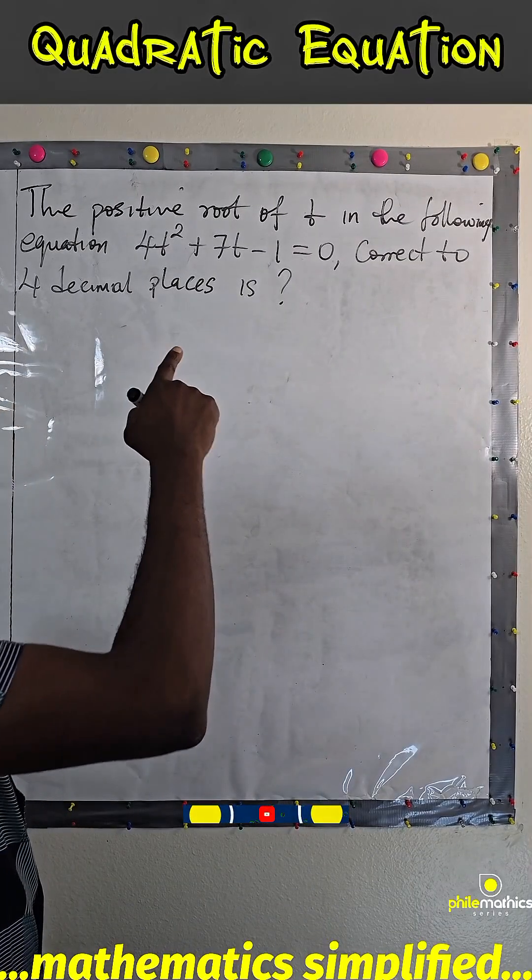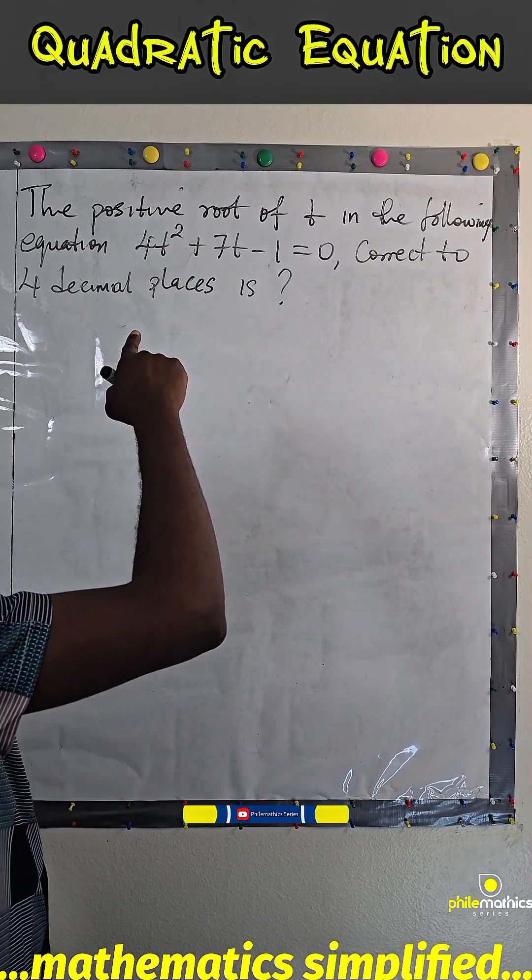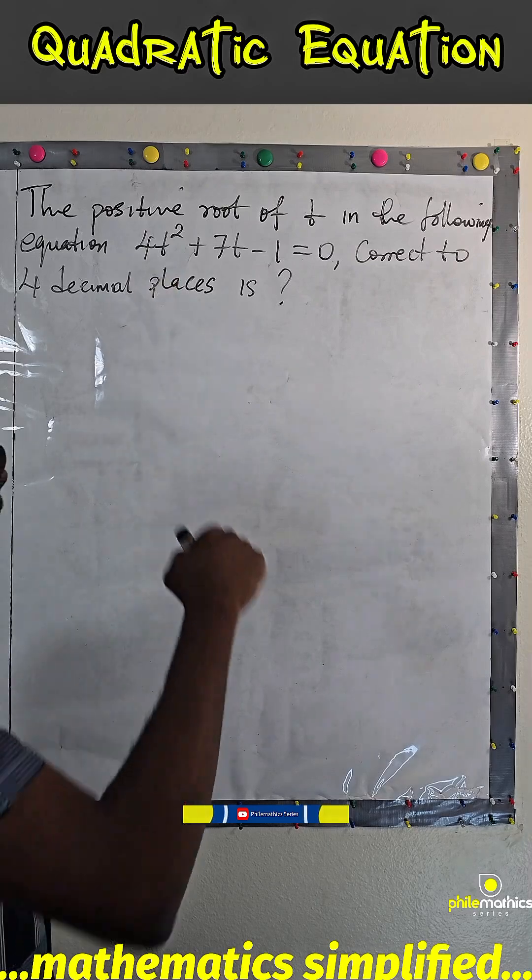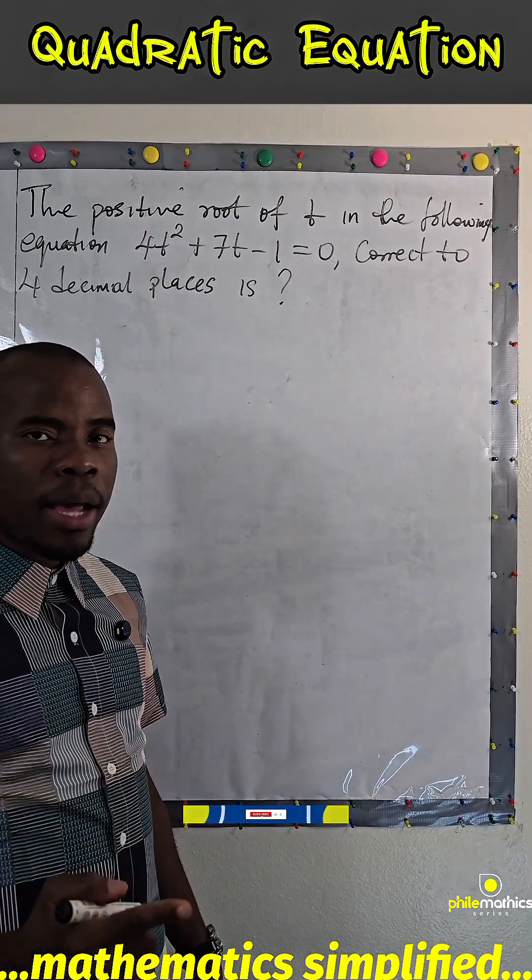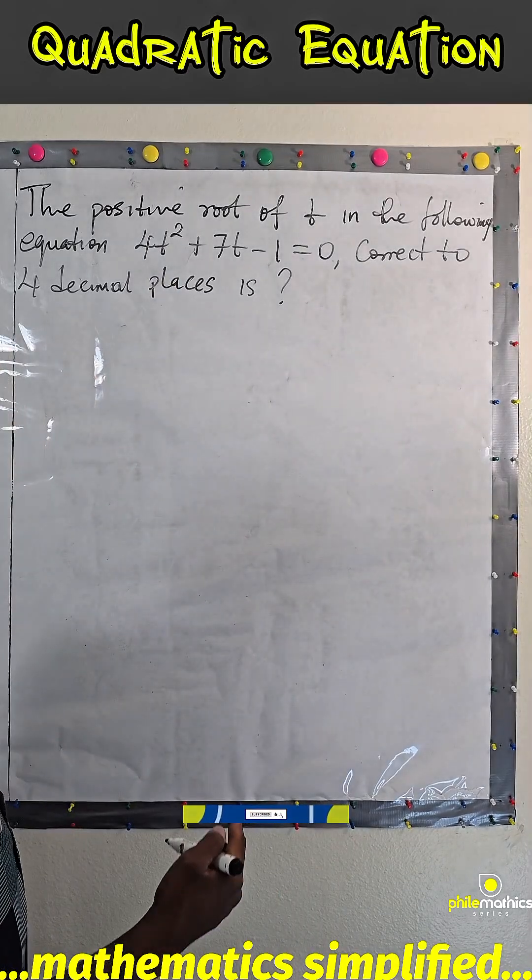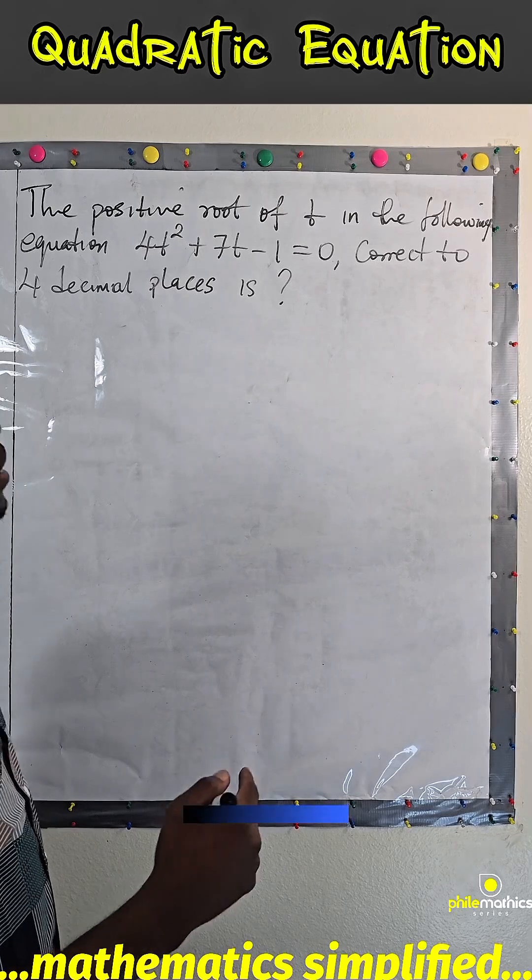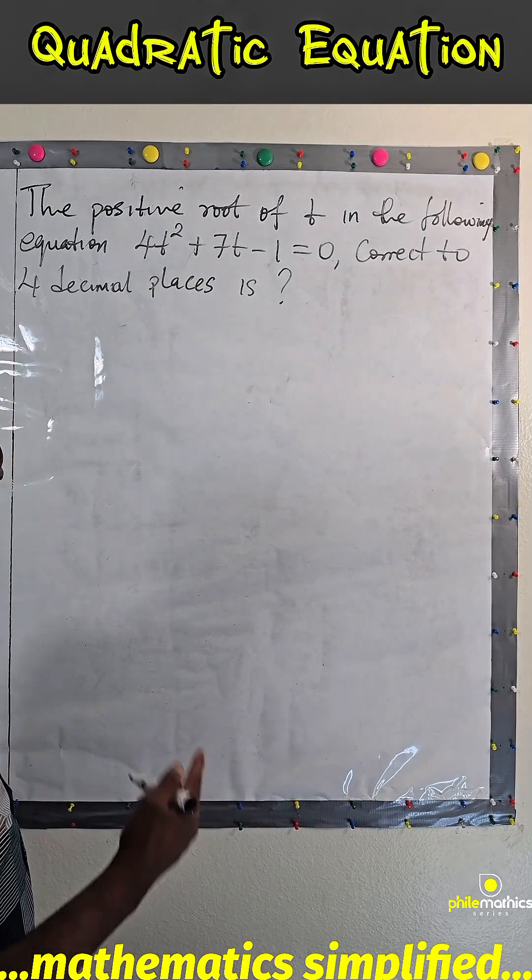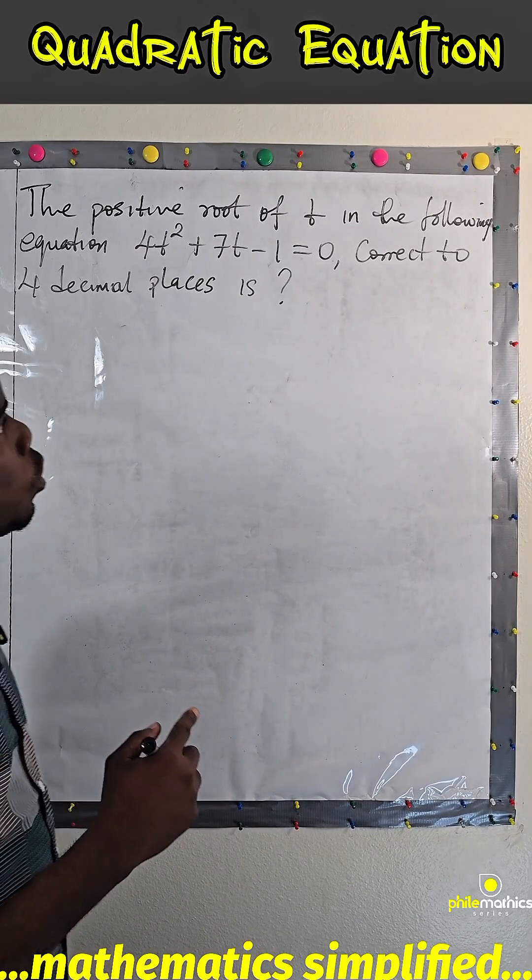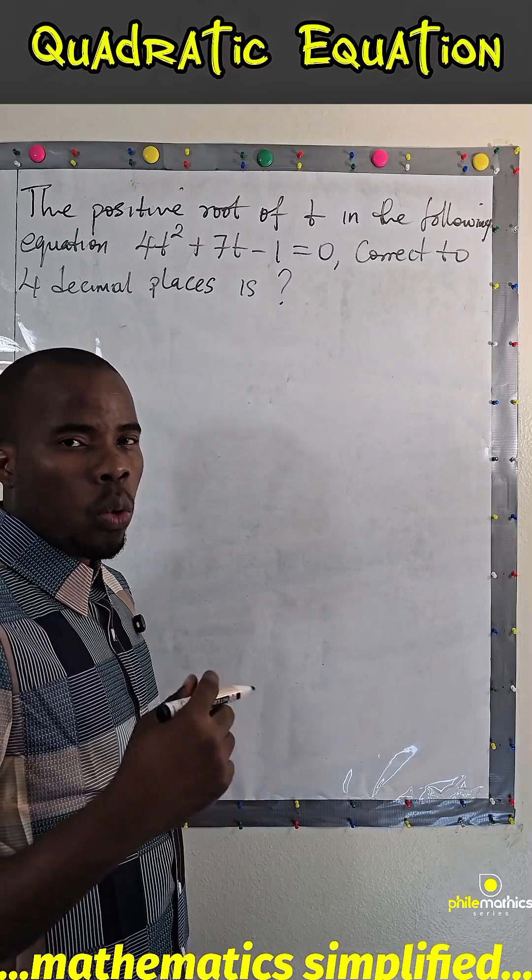We are told that the positive root of t in the following equation 4t² + 7t - 1 = 0, correct to 4 decimal places, is what? For us to do this, we have to use the quadratic formula.